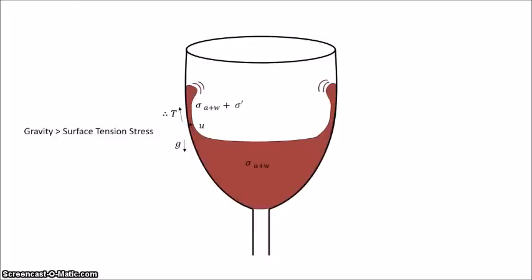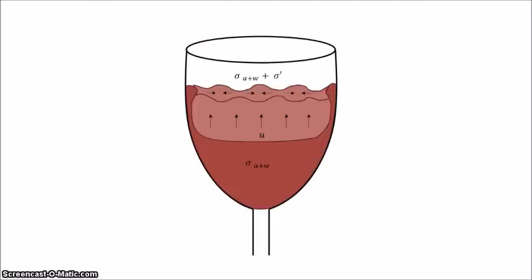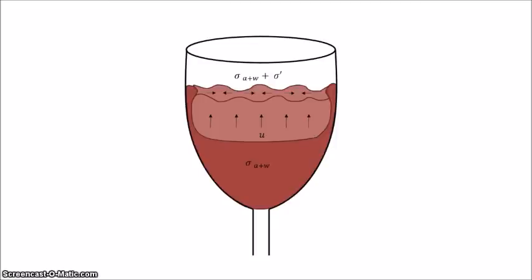Eventually, gravity and surface tension stress reach similar magnitudes and the accumulated fluid becomes unstable, and the fluid will rush back down the glass under gravity. Looking at it from a different view, you can see a sheet of wine flowing up in the direction of the surface tension gradient and accumulating near the top. After some time, gravity outweighs the surface tension stress and causes the wine to tear.